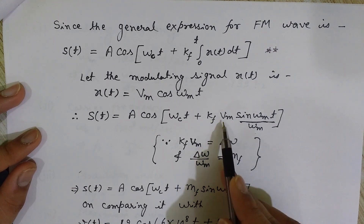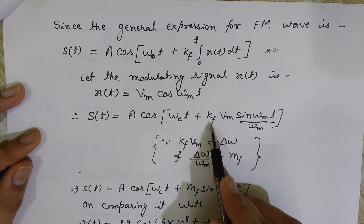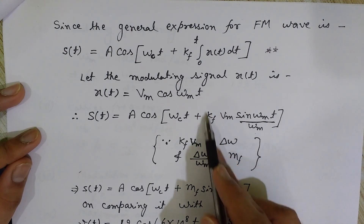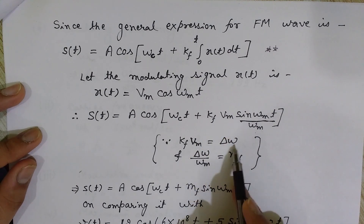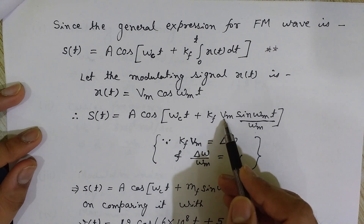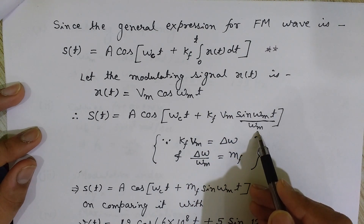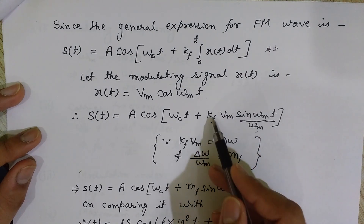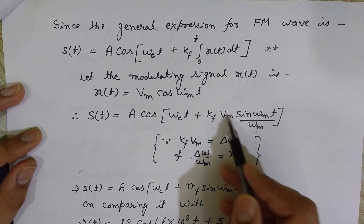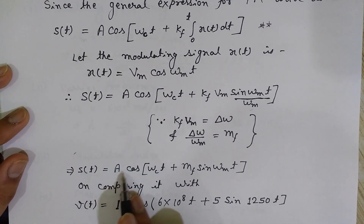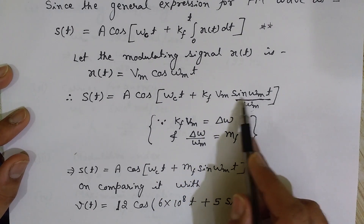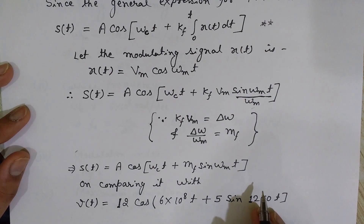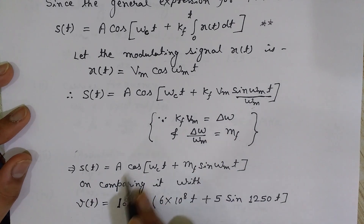Now, the term kf × Vm is nothing but Δω — the frequency deviation. So kf × Vm can be replaced by Δω. At this place I write Δω, and in the denominator I have ωm. So it is Δω divided by ωm, which can again be written as mf — the modulation index. Therefore, s(t) = A cos(ωct + mf sin(ωmt)). Now I can easily compare this equation with the given equation.